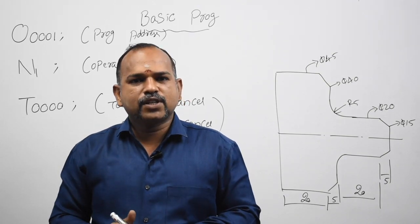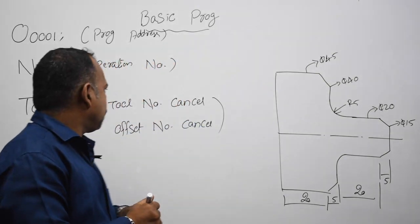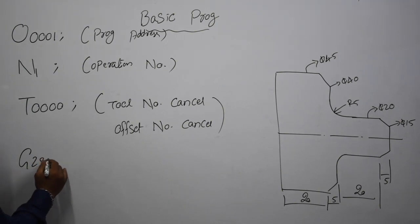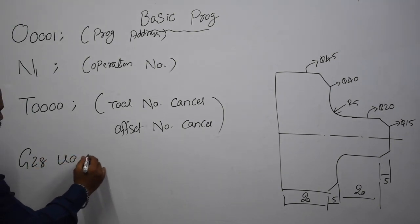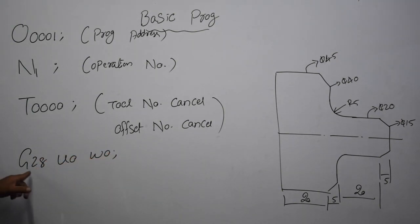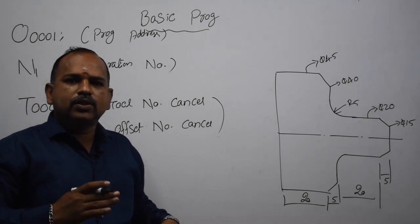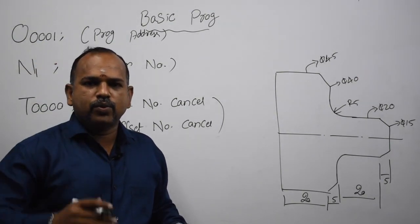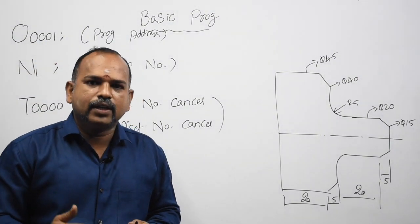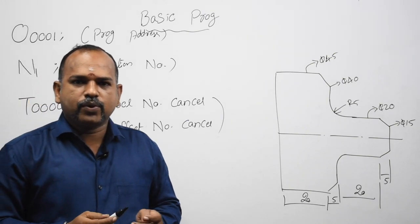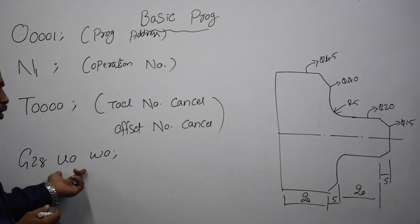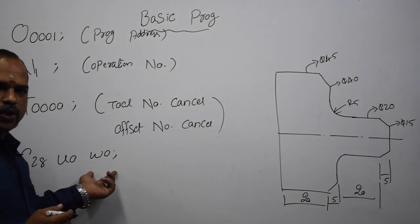First, G28 U0 W0 — tool return to home position. First of all, we do the home position, that is G28 U0 W0.